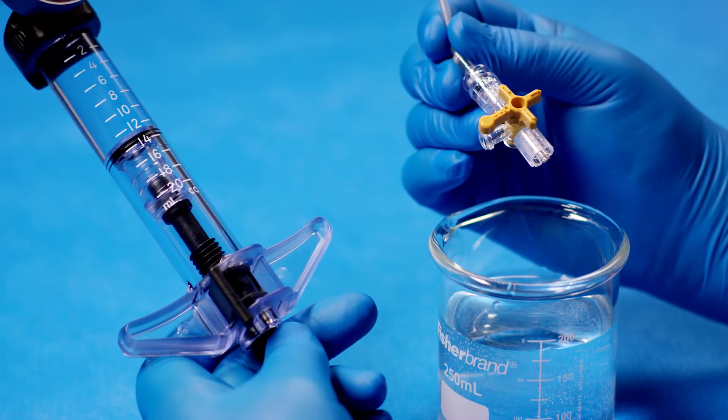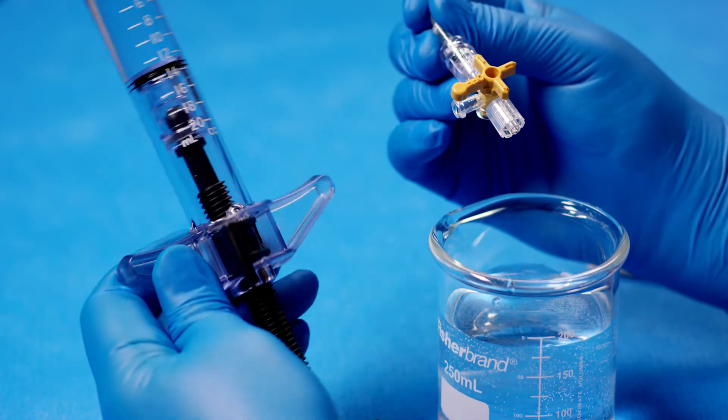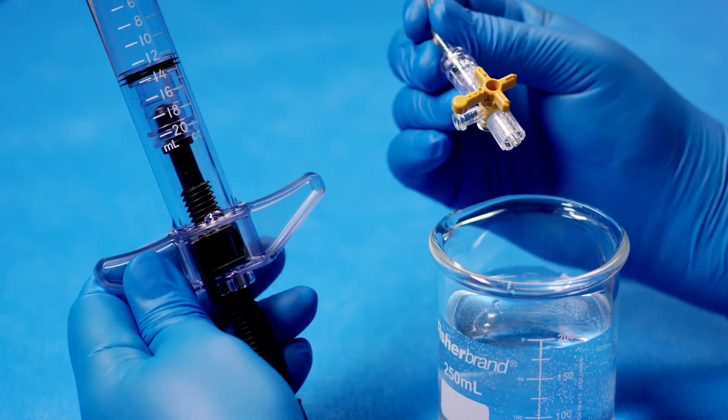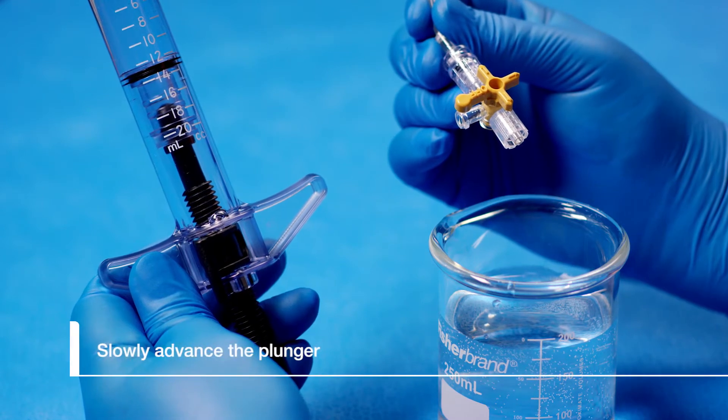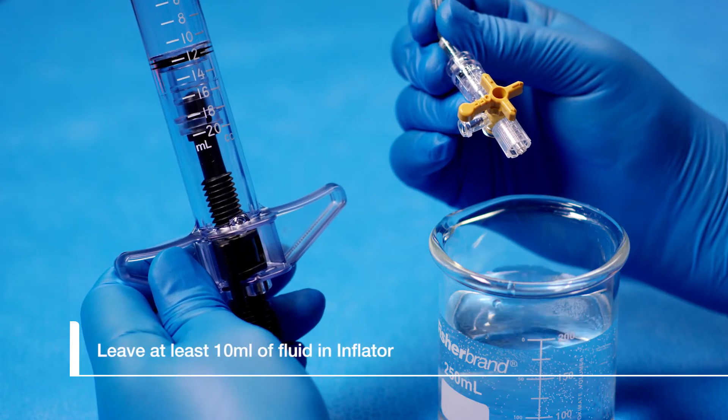Next, we will remove air from the inflator. Turn the inflator upright. Ensure the locking switch is still in the left position and slowly advance the plunger until all of the air is expelled from the inflator and catheter.